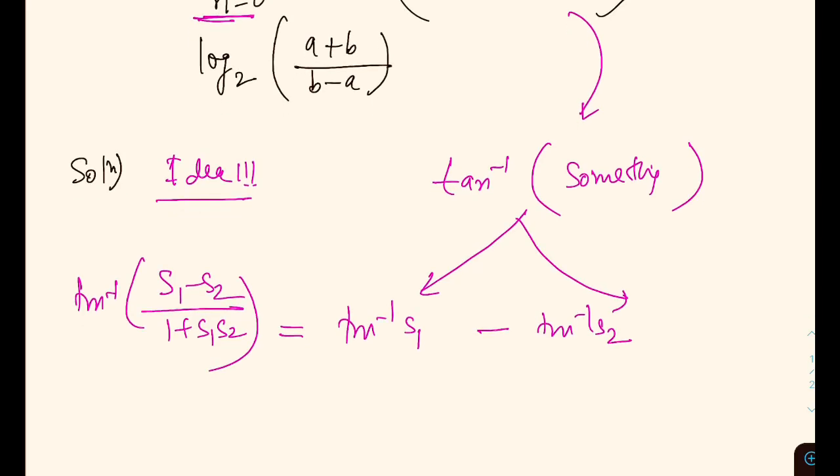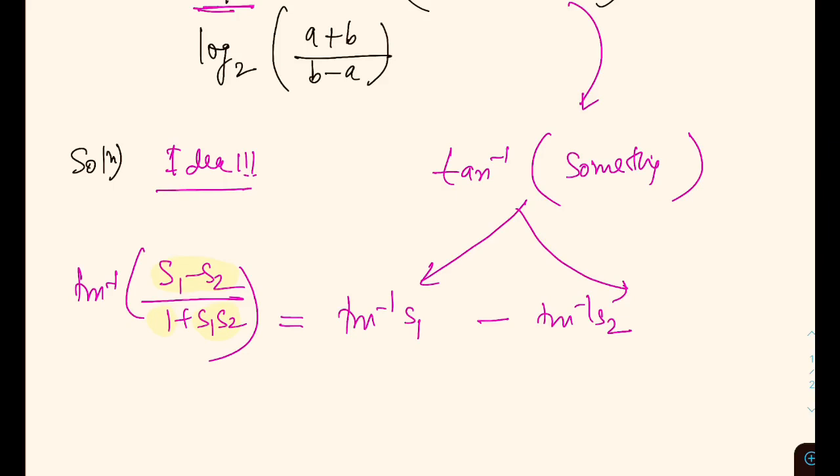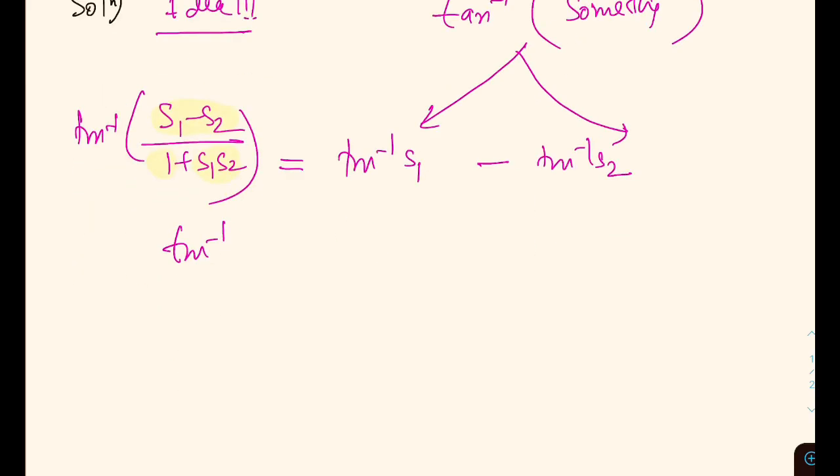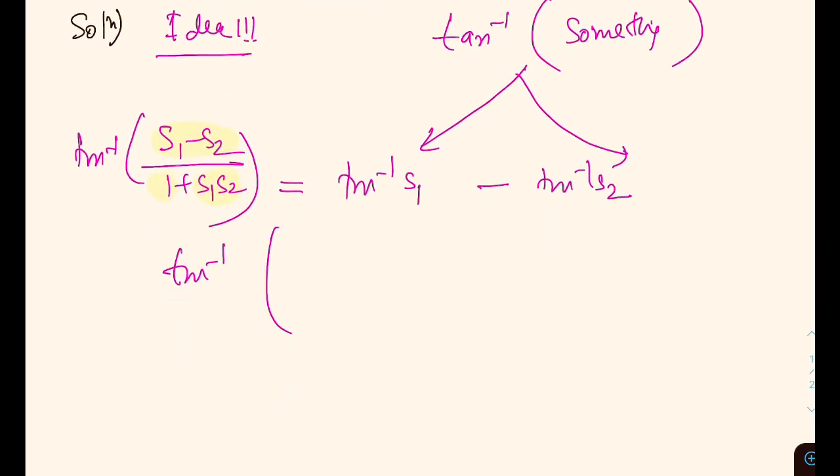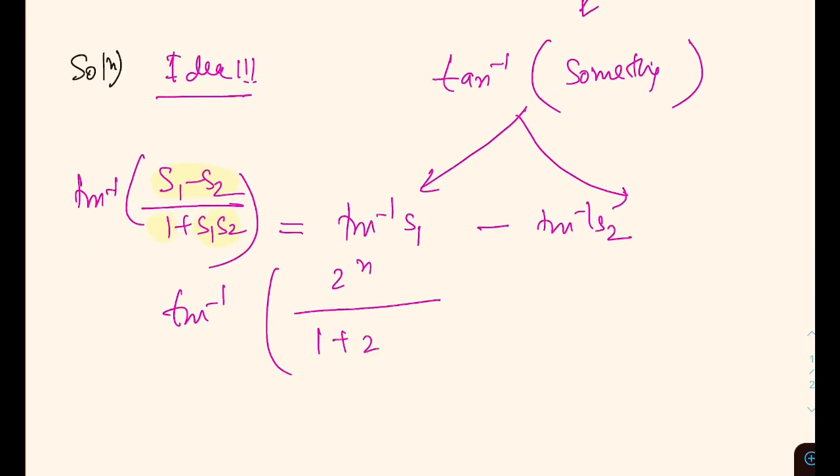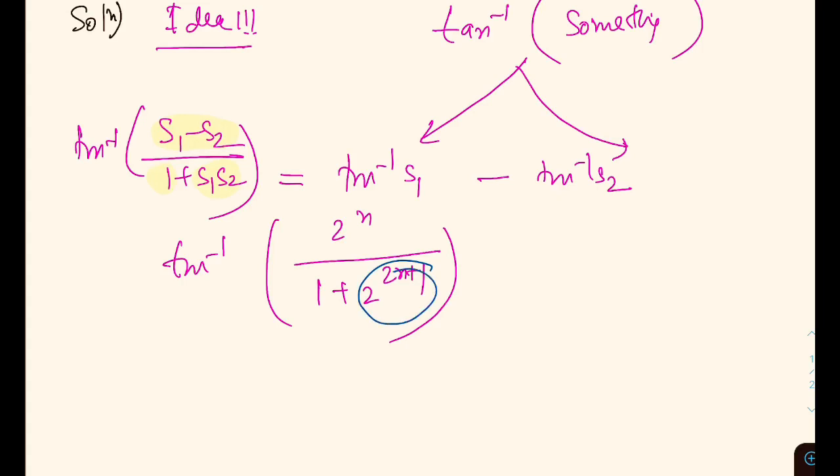Our target is to bring S1 minus S2 and 1 plus something. So what we can see here is we have 1 plus something. If I convert that expression into tan inverse, cot inverse theta is tan inverse 1 by theta, so it will be 2 to the power N by (1 plus 2 raised to the power 2N plus 1). Next, the thought will be to put this into two factors S1, S2 such that their product is...